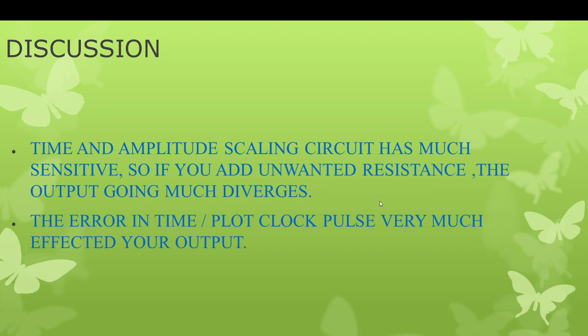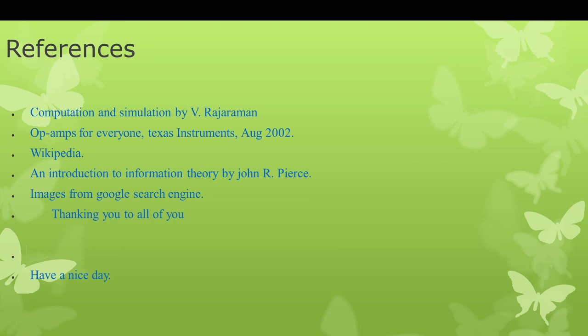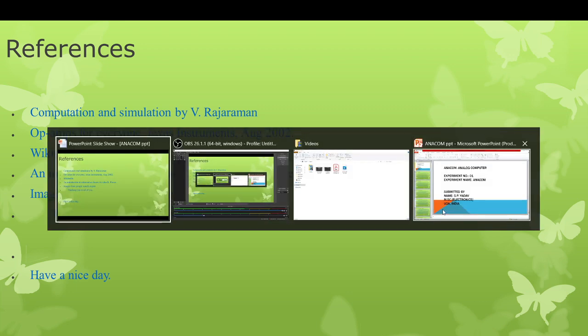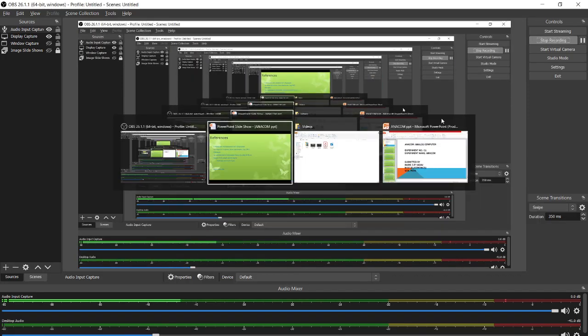For references, you can study 'Computation and Simulation' by V. Rajaraman, and 'Op Amp for Everyone' by Texas Instruments (August 2002). Images are from Wikipedia and Google. Also referenced is 'Introduction to Information Theory' by John R. Pierce. Thank you all, have a nice day, bye bye.